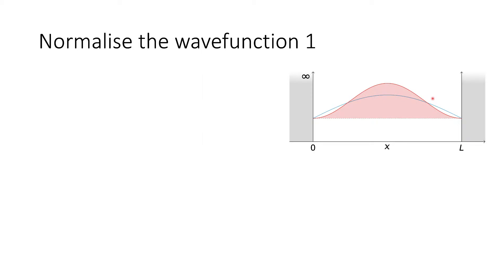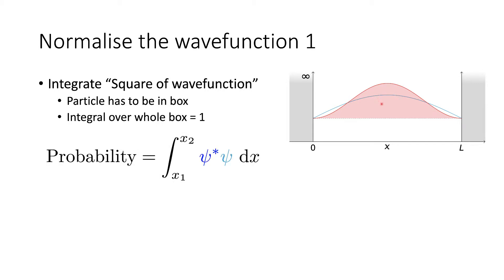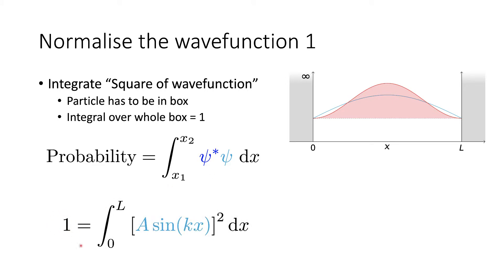The first step in normalizing our wave function is to find an expression for the area underneath the curve. We need to integrate the square of this wave function. The particle has to be in the box somewhere, so the integral over the whole box is equal to 1. The probability is the integral between two limits of the square of the wave function. When we do this over all space, the total probability is 1 for the integral between 0 and L — that's the entire length of the box — of the wave function squared with respect to x.